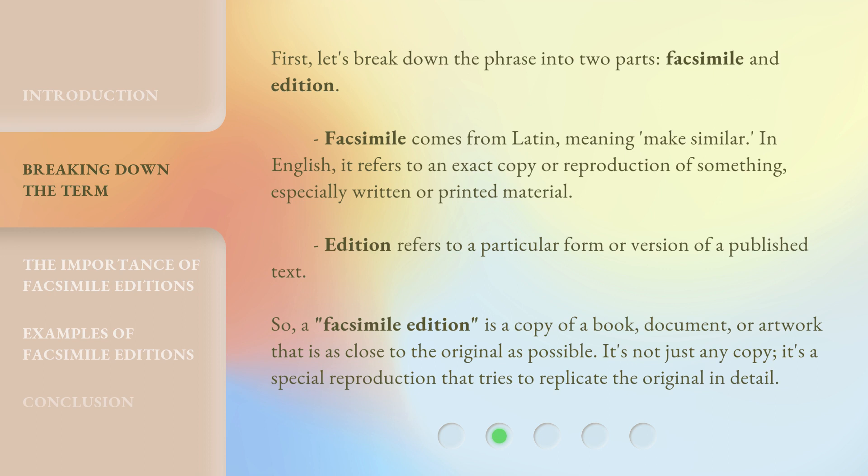Edition refers to a particular form or version of a published text. So, a facsimile edition is a copy of a book, document, or artwork that is as close to the original as possible. It's not just any copy — it's a special reproduction that tries to replicate the original in detail.